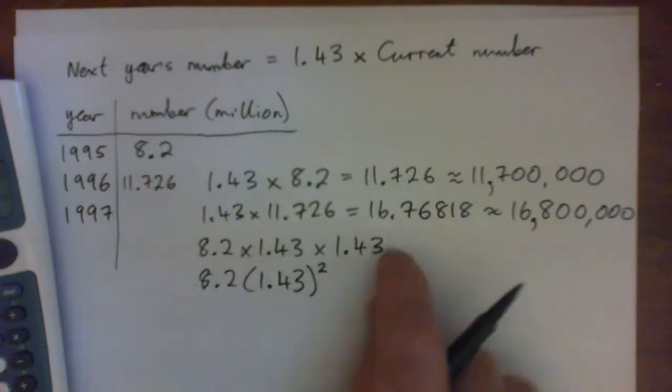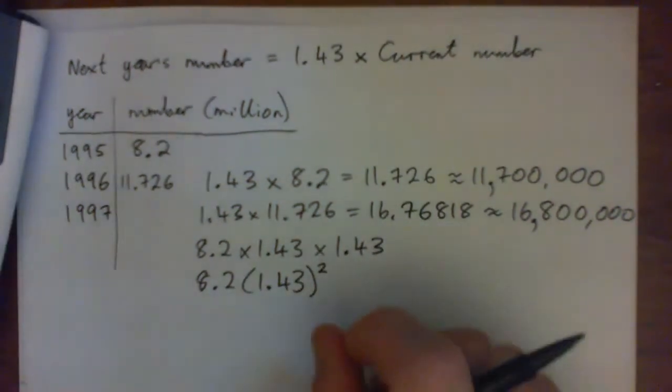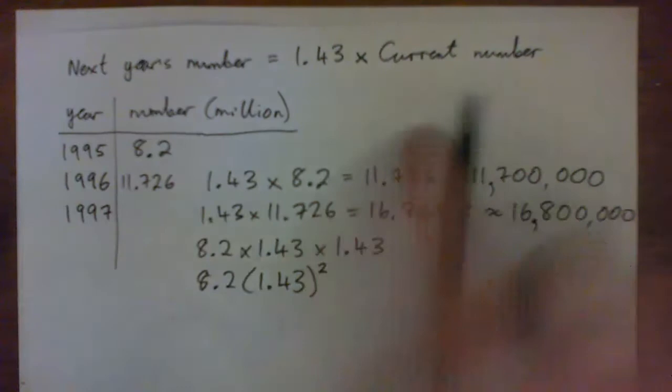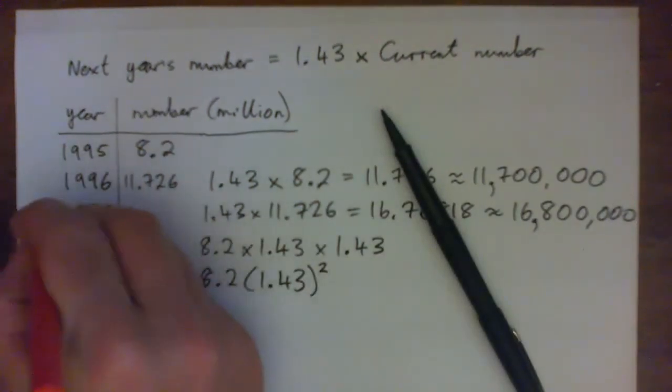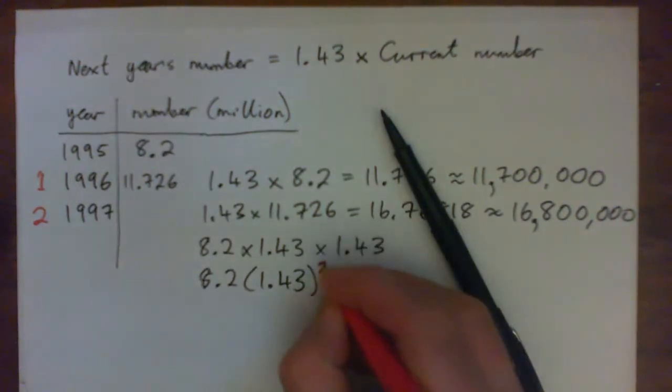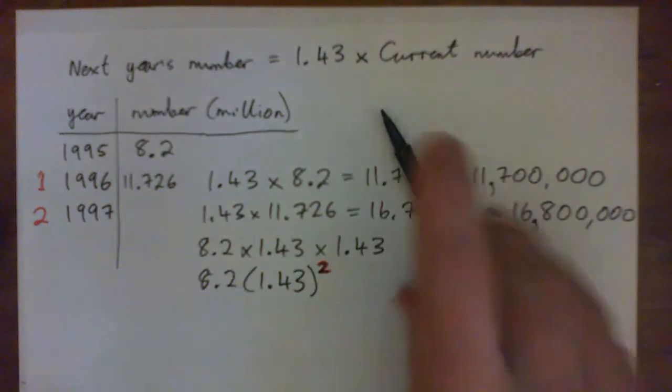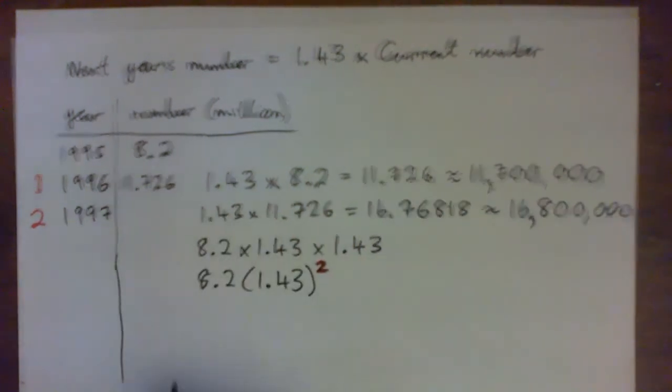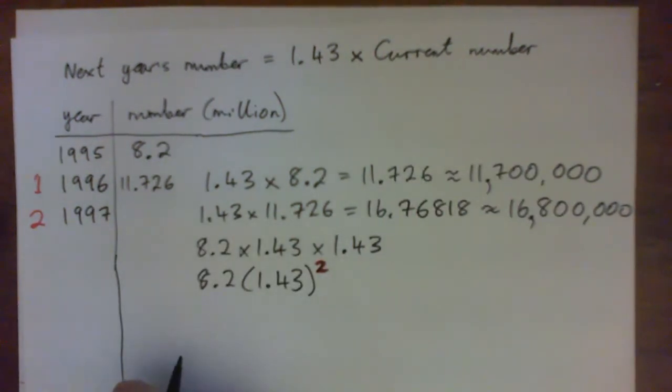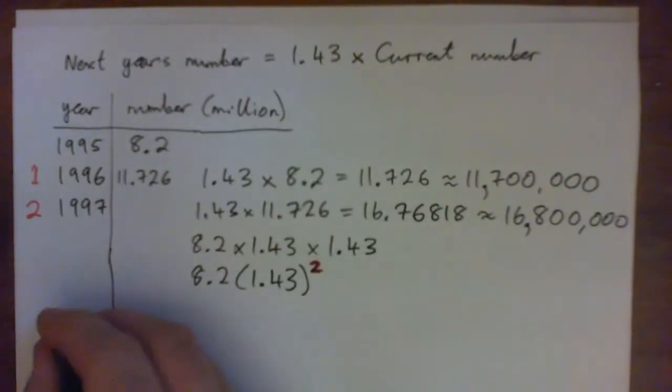Because it's 1.43 times 1.43, so it's 1.43 squared. So after, and remember, this is 2 years later, look at that, 2 years later. This is 1 year later, but 1997 is 2 years later, and here's the 2. See that? See how it matches up, right? So just for fun, now, I know our question asks us to do 2005, what would it be in the year 2000? Can you press pause and get the answer?